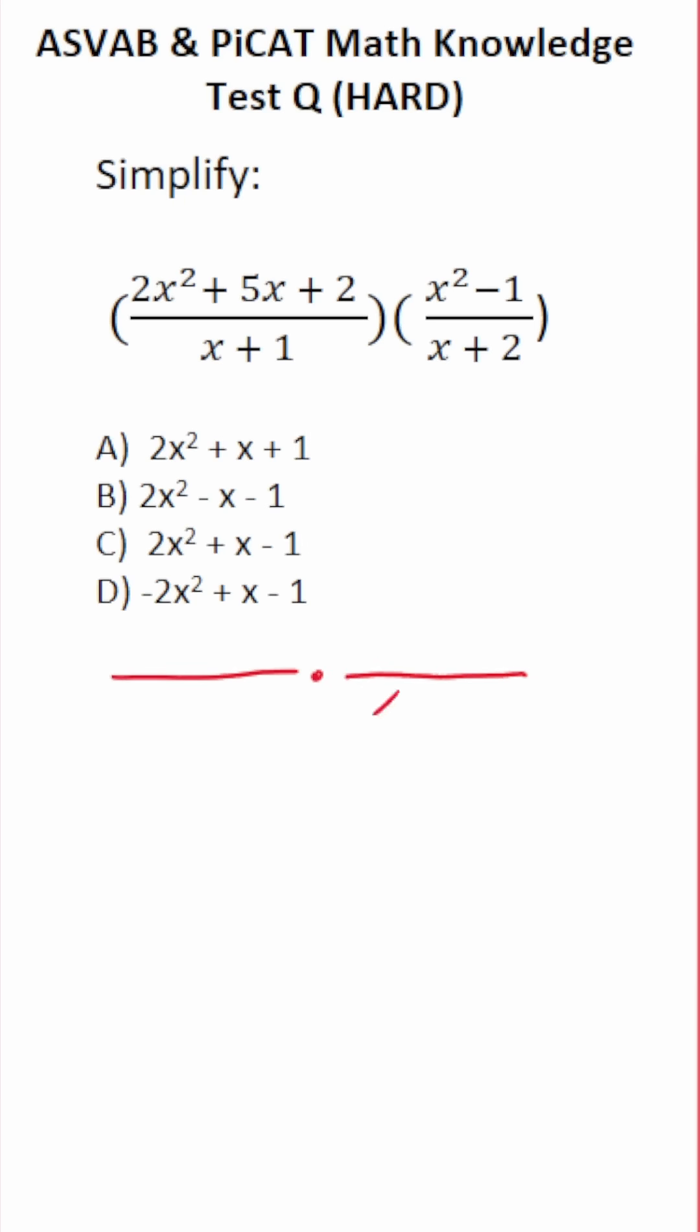I can't factor x plus 2, so I'm just going to bring that down. How do I factor x squared minus 1? Well, that's just x plus 1 times x minus 1. We can't factor x plus 1 here, so just bring it down as is.